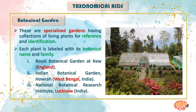Our today's topic is Botanical Garden under Taxonomical Aids. In the previous topic, we studied about Herbarium, and I also gave you some information about taxonomical aids. Today we will talk about Botanical Garden. Botanical garden is a specialized garden having a collection of living plants for reference and identification.